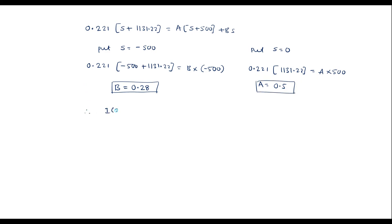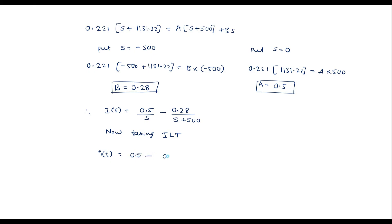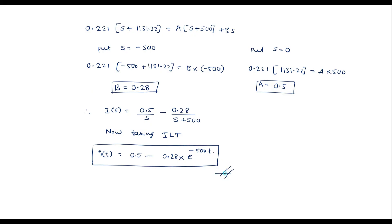Therefore I(s) = 0.5/s - 0.28/(s + 500). Taking the inverse Laplace transform: i(t) = 0.5 - 0.28 e^(-500t). This is the current expression for the interval at t equal to 500 microseconds. Thank you for watching.